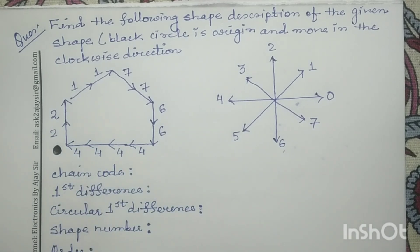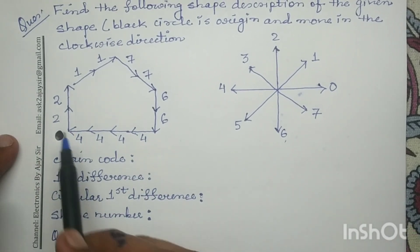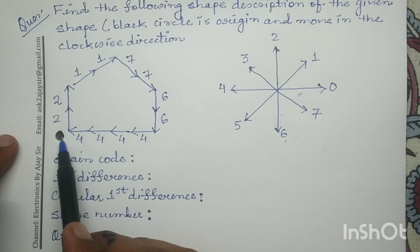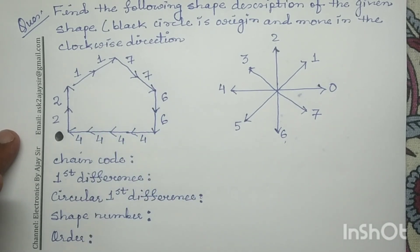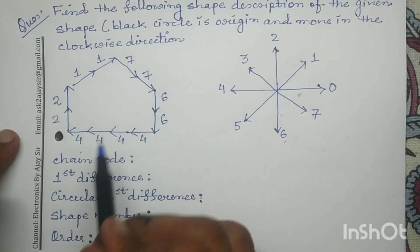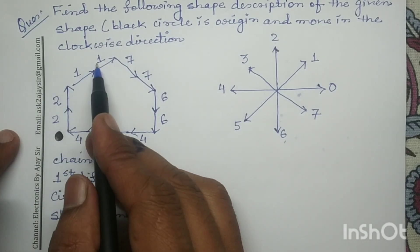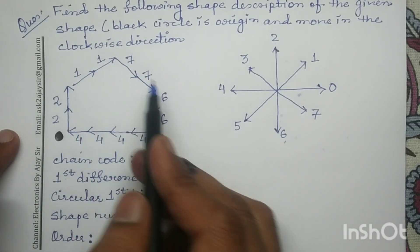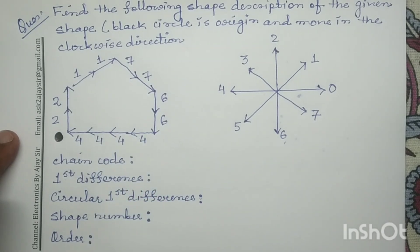This black dot is my origin from which I have to start my rotation, and I have to rotate in the clockwise direction as per the direction given by the arrows. So my chain code becomes: 2 2 1 1 7 7 6 6 4 4 4 4.